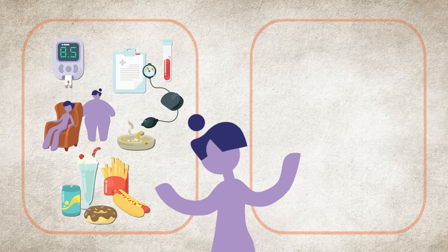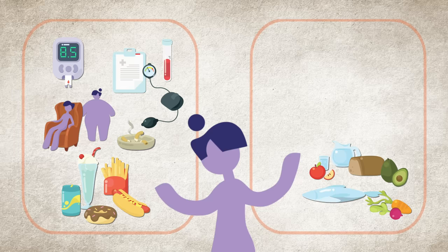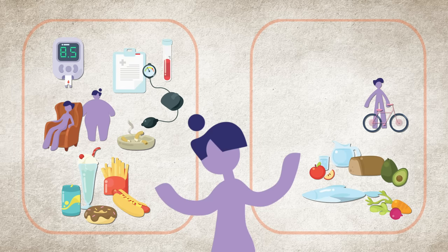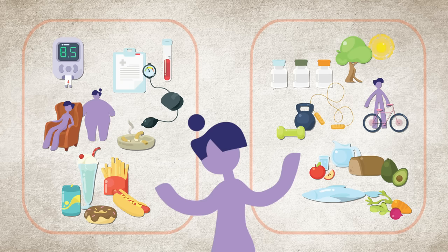Preventing and managing one condition can help prevent and manage the others. That includes eating a healthy diet, maintaining a healthy weight, getting enough physical activity, and if needed, certain medications.